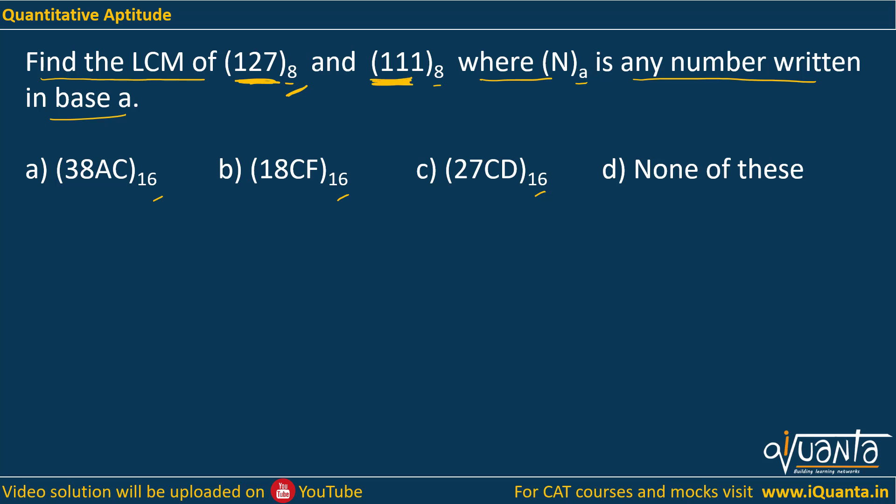In these questions, always convert all values to decimal first. To convert 127 base 8 to decimal: pick the unit digit 7 and multiply by 8^0, then the second number 2 times 8^1, then the third number 1 times 8^2. This becomes 64 + 16 + 7, which gives us 87.